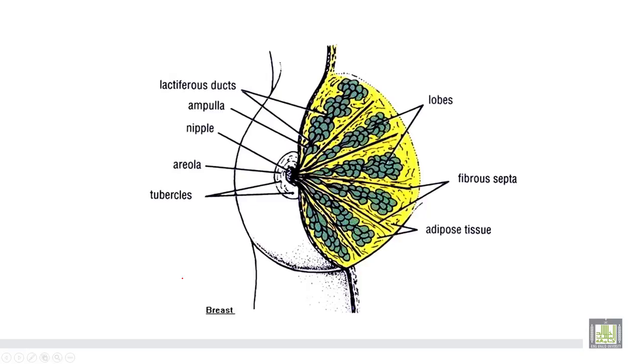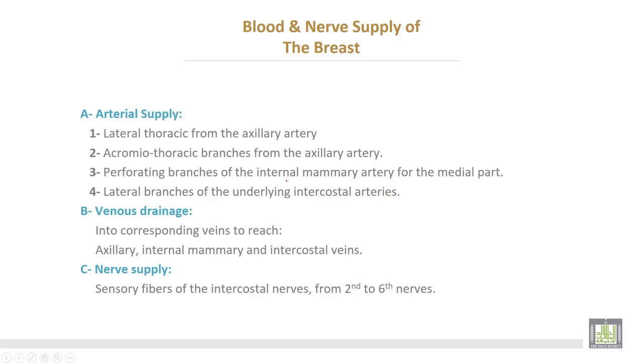This shows the lobes and lobules of the mammary gland, with lactiferous ducts all directed towards the nipple.